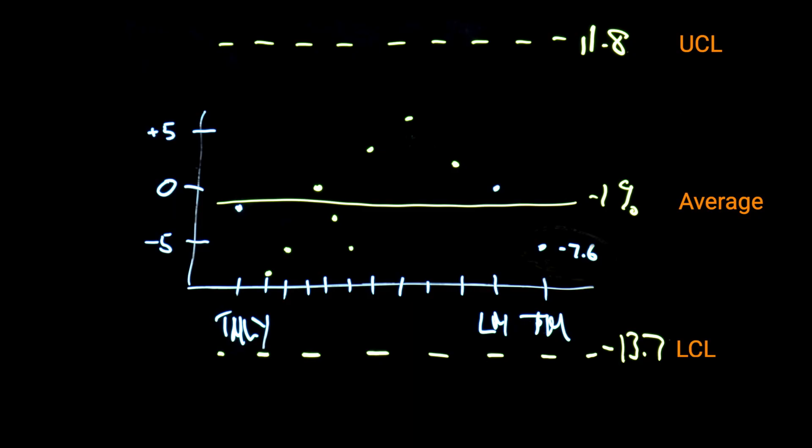So given that, minus 7.6 we saw this month is not at all an unusual observation to get. We might not be happy about it. Minus 7.6% is outside of our plus or minus 5% standard. But it's not an unusual observation, not an unusual value to get given the process that we have. So there's no basis for taking action on our process based on that data point.